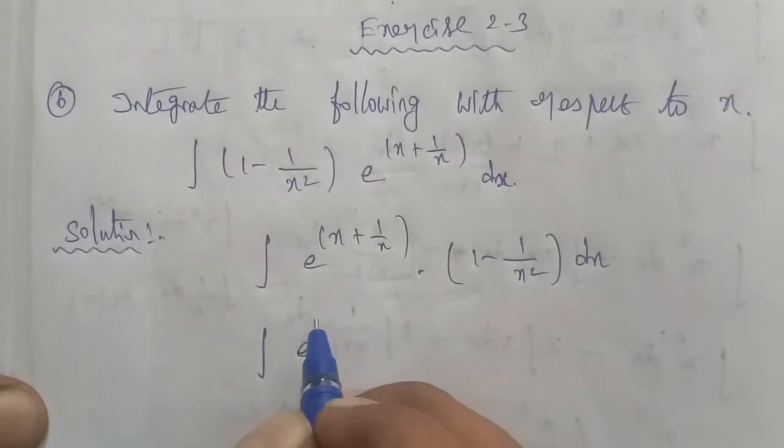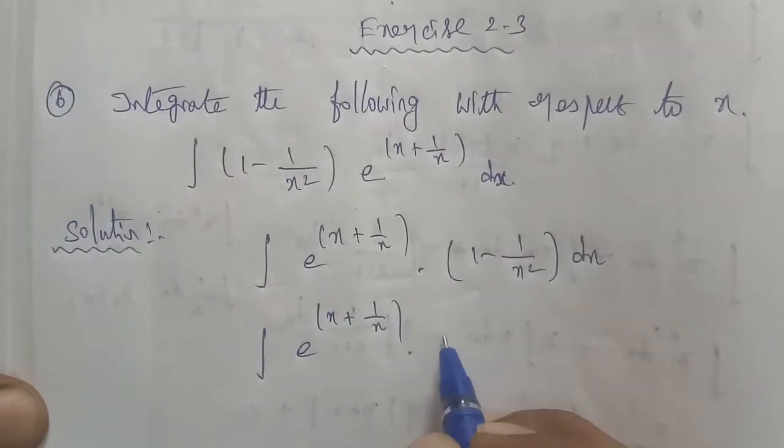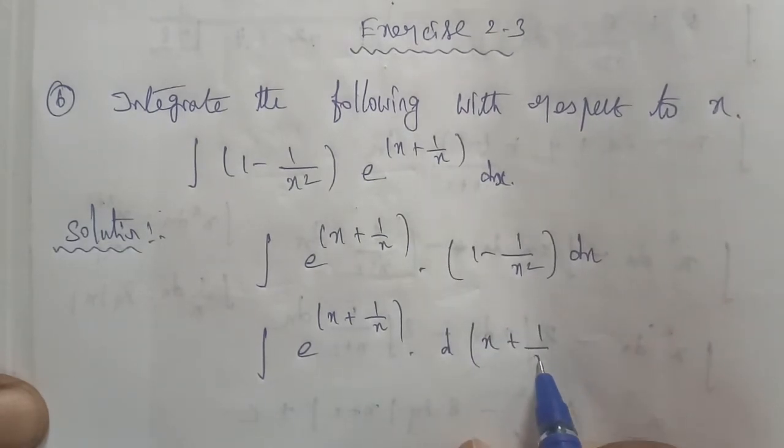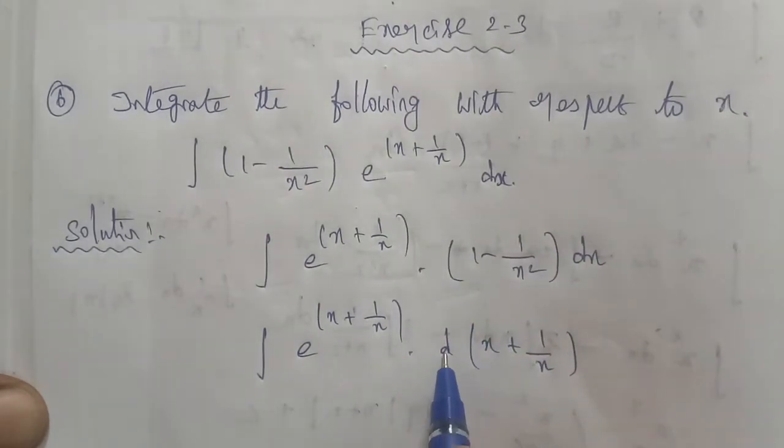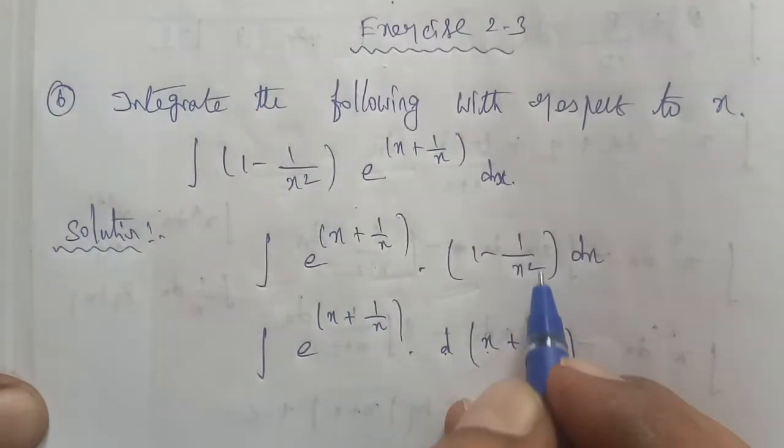In the next step, e power of (x plus 1 by x) in step one, we recognize the differentiation of (x plus 1 by x). On reverse differentiation, differentiation of x is 1, differentiation of 1 by x is minus 1 by x square.